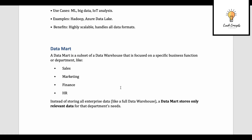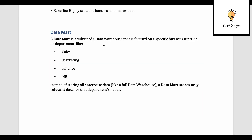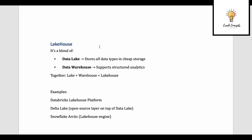A data mart is a subset of a data warehouse focused on a specific business function or department — like sales, marketing, finance, or HR. Instead of storing all enterprise data like a full data warehouse, a data mart stores only relevant data for that department's needs. As shown in the diagram, the data warehouse is large and contains all structured data, but it consists of data marts segregating data into different departments. All the finance data is in one data mart, all the HR data in another, and so on — all as subsets of the data warehouse.